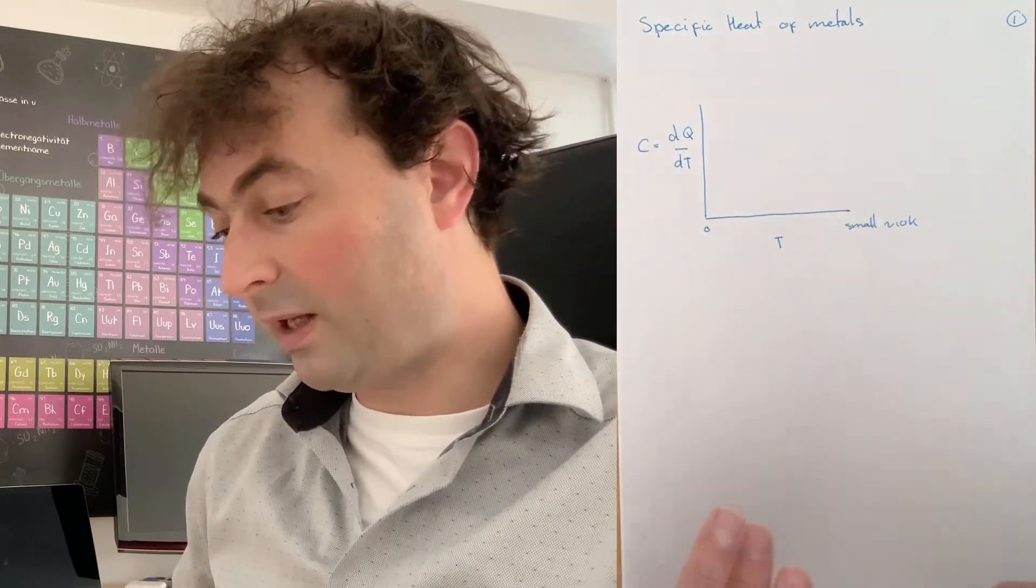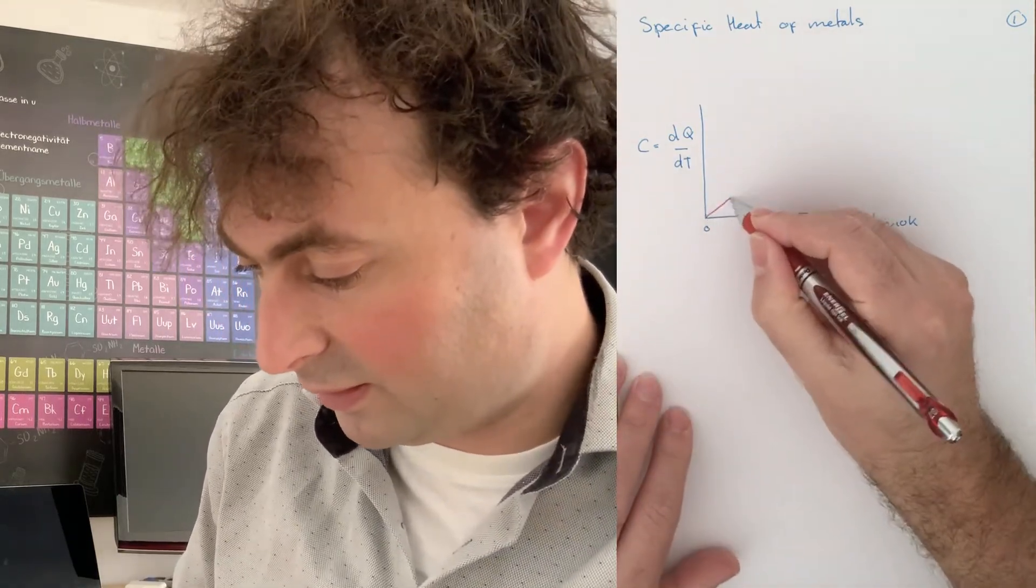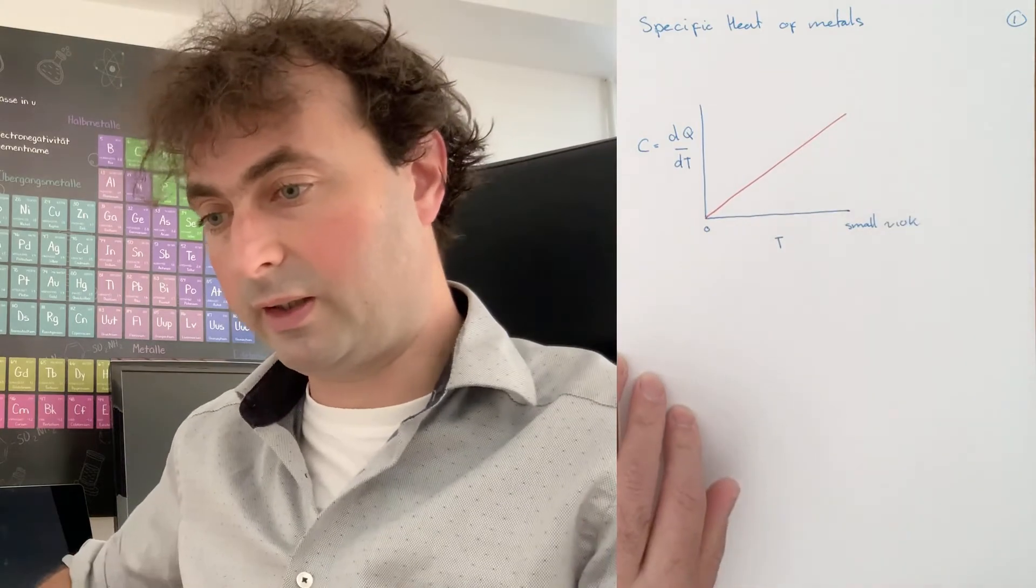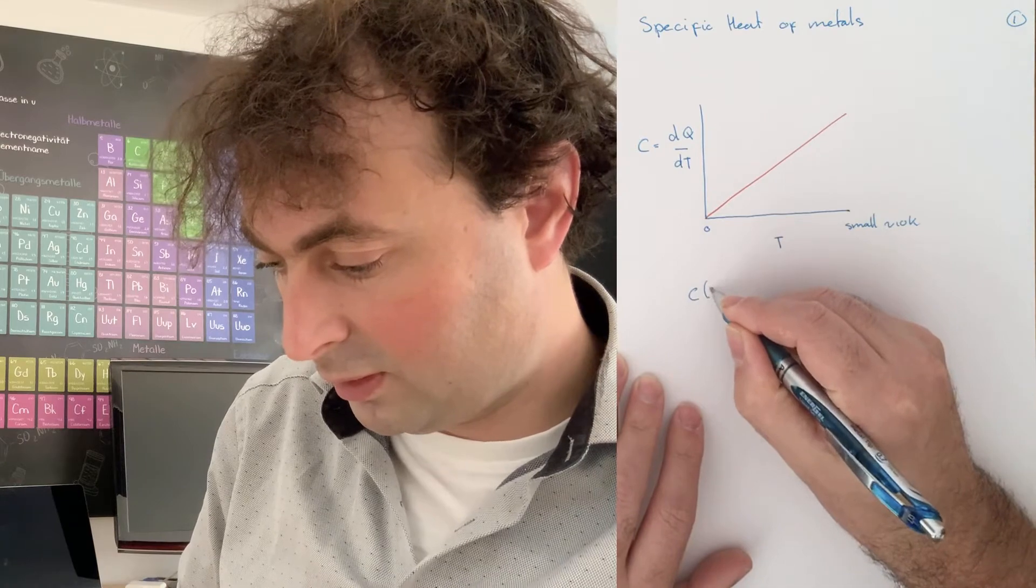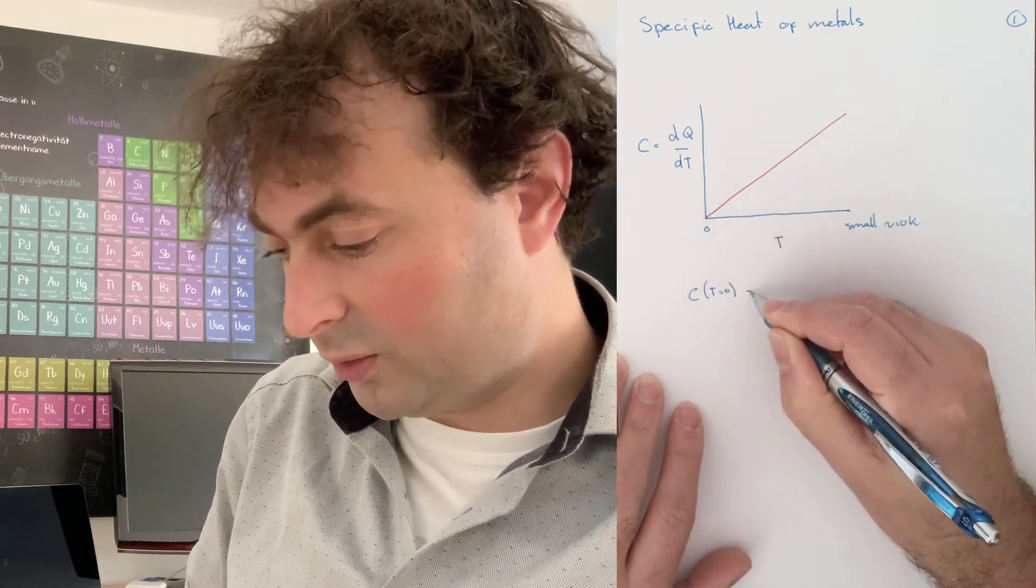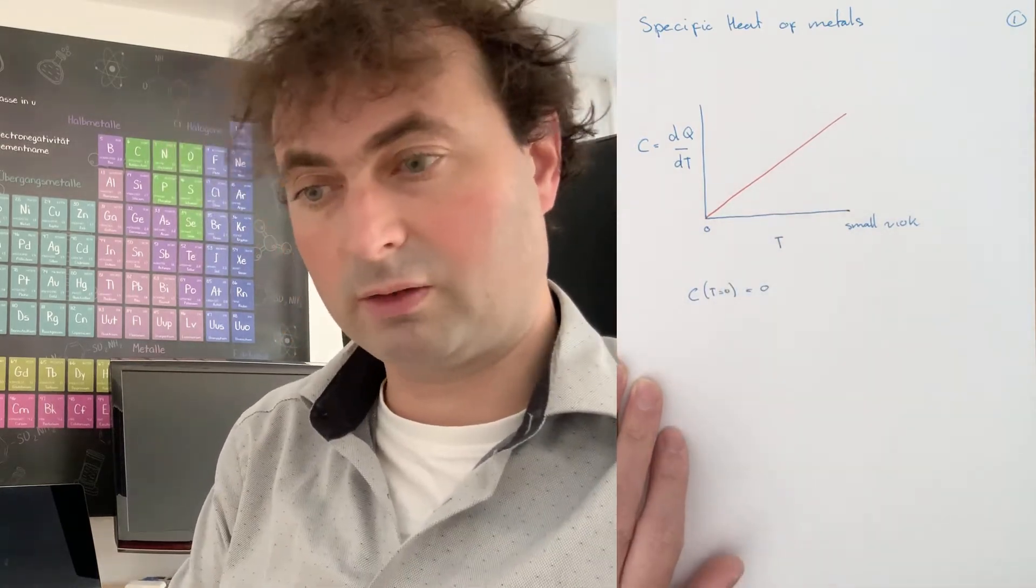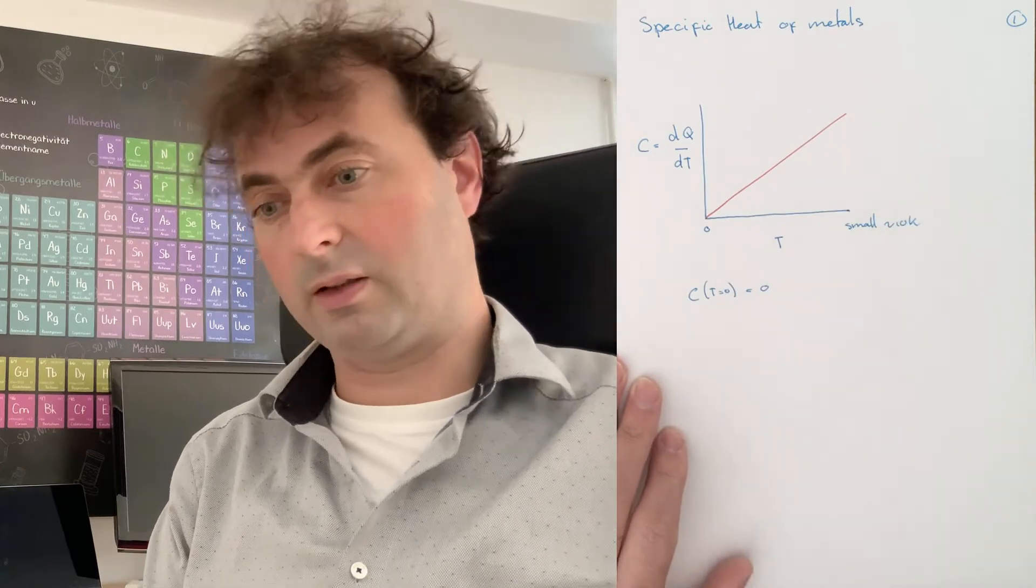then in a metal we will find that this is a straight line. So the specific heat at T equal to zero is zero for the normal metals that we encounter.